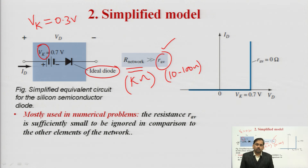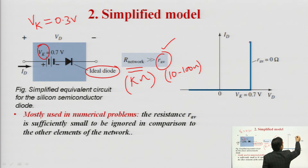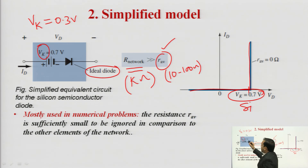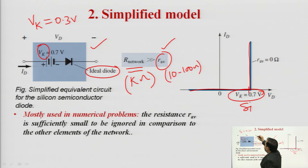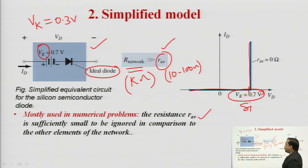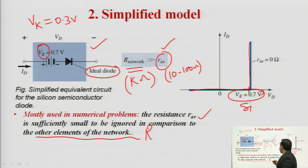We can neglect R_AV. If R_AV is 0, this curve becomes a straight line and we have V_k which is 0.7 for silicon. R_AV is short circuited since its value is 0. Now we can use this equivalent — a battery of 0.7 volt and an ideal diode — instead of a diode when using the simplified model in most numericals. The average resistance R_AV is sufficiently small to be ignored in comparison with the other elements of the network.